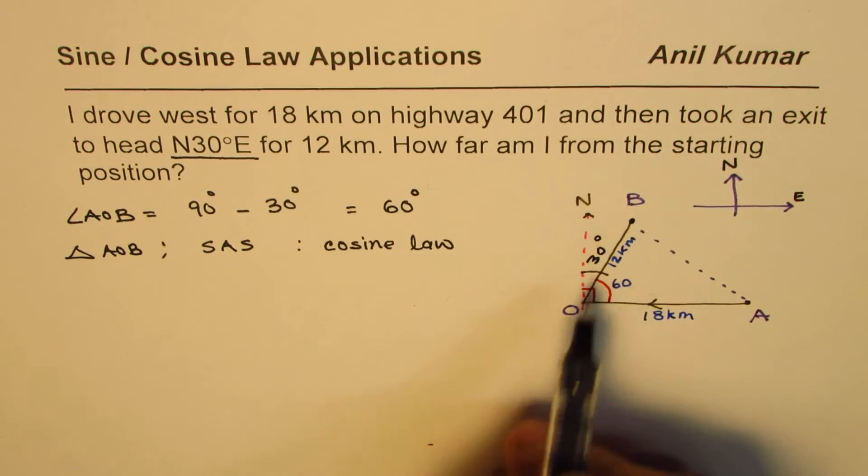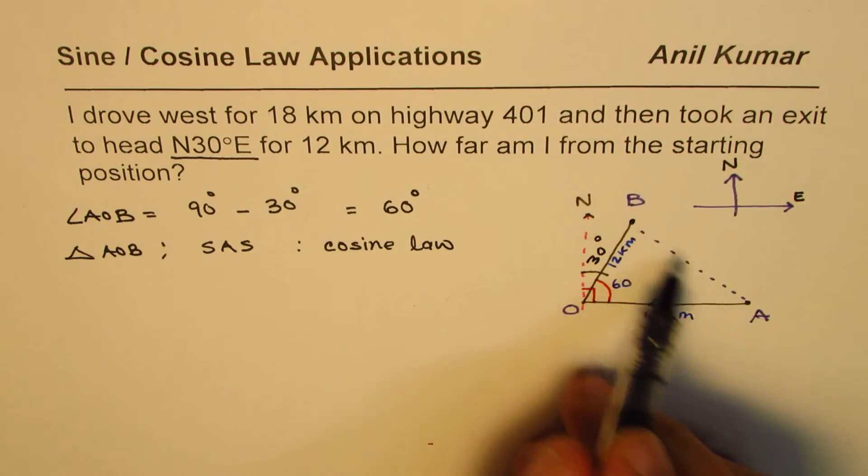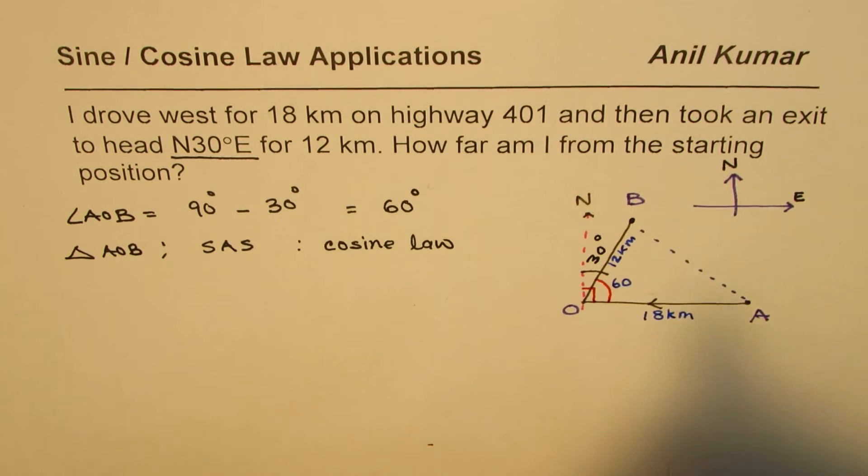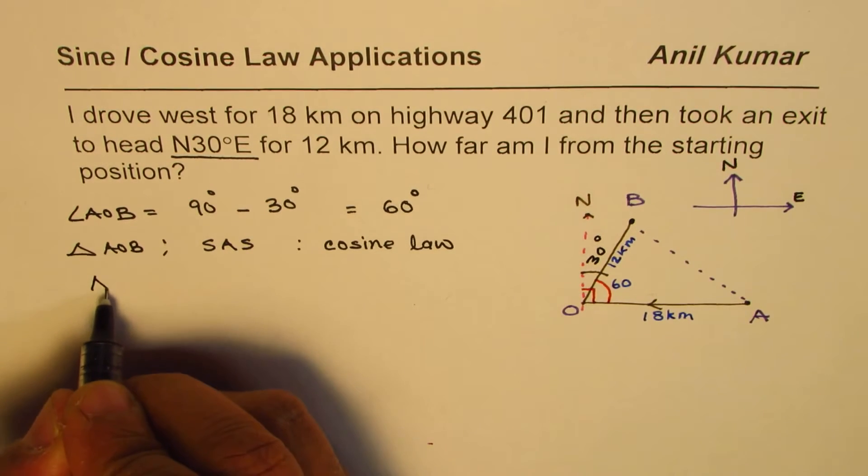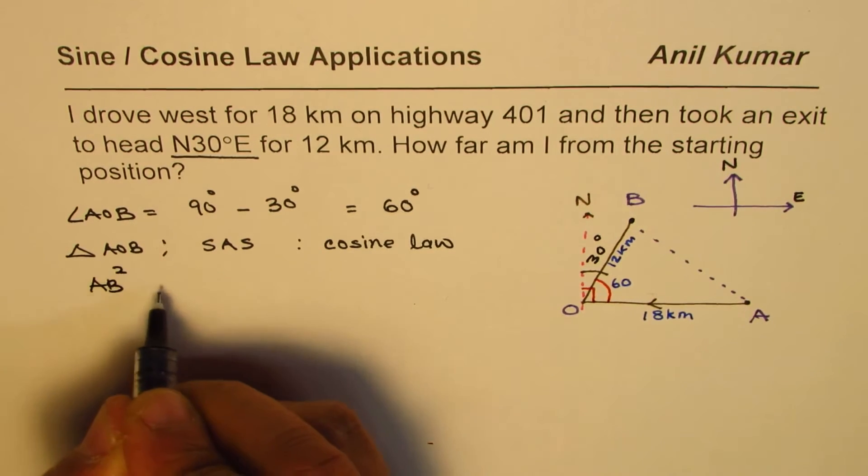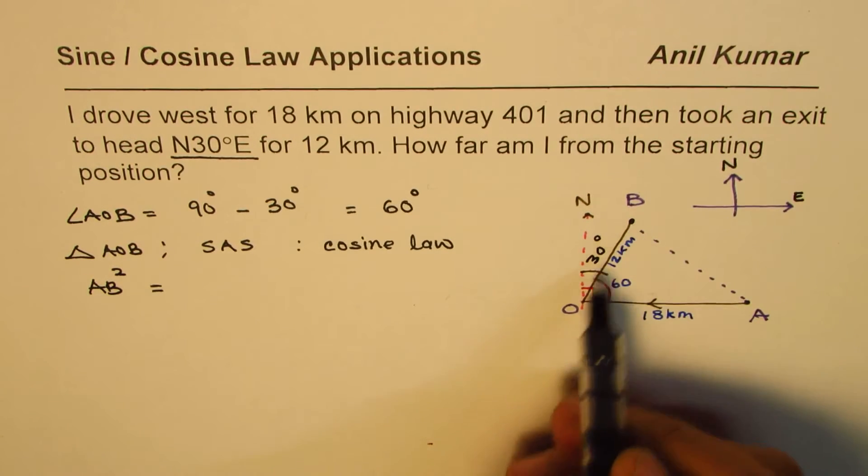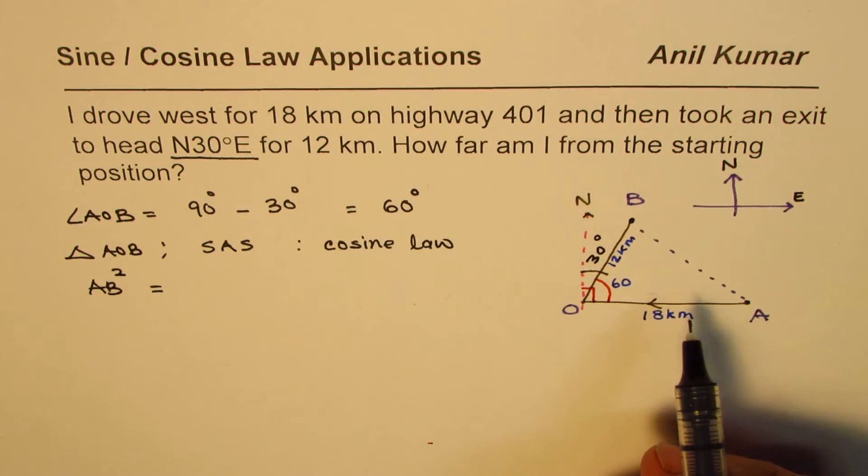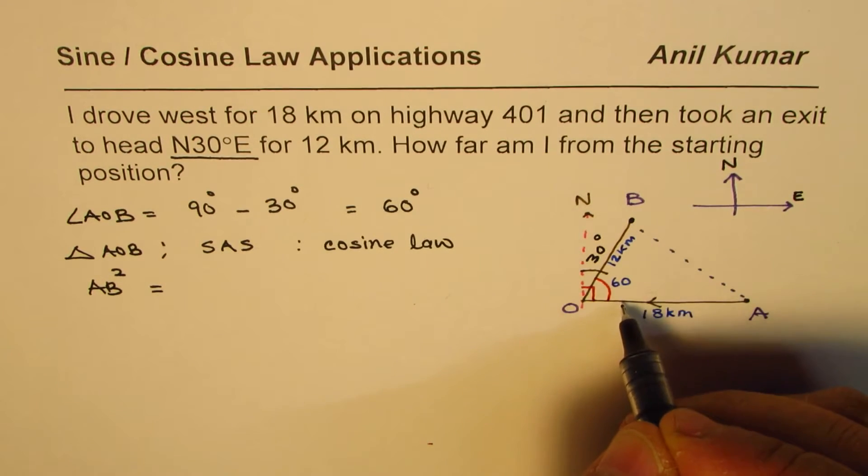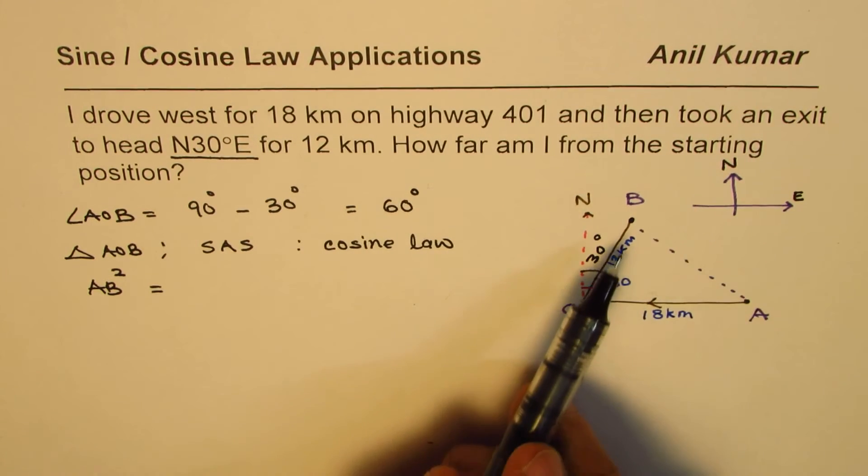Some students find cosine law very tricky to remember. Here is an easy way to remember. I also don't remember the law but I know how to find the angle or the side. In this example we'll find AB, so AB squared is equal to these two side squares. Normally it is related with the Pythagorean theorem. If you draw a perpendicular here, you know a² + b² = c², but this is not a right angle.